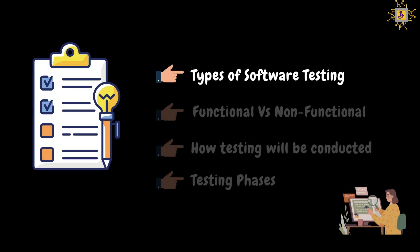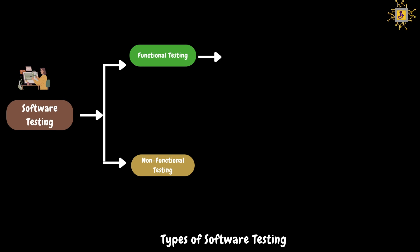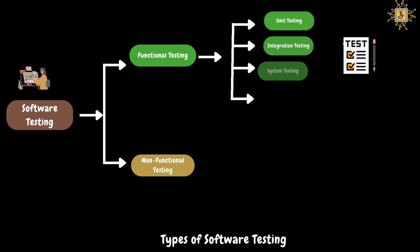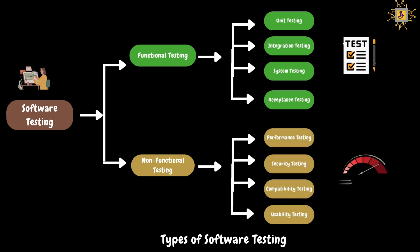Let's discuss different types of software testing. Basically, we have two types: functional and non-functional testing. Functional testing can be classified into four categories: unit testing, integration testing, system testing, and acceptance testing. Similarly, non-functional testing can be classified into four categories: performance testing, security testing, compatibility testing, and usability testing.